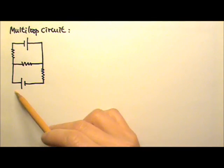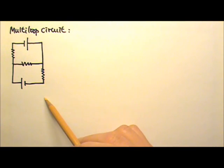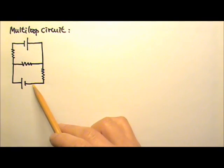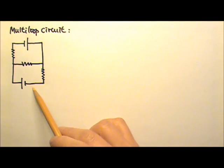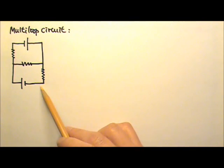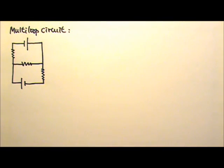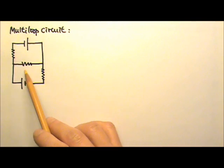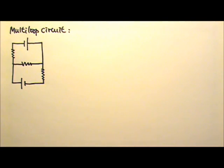Sometimes we encounter multi-loop circuits like this one. It is a multi-loop circuit because there's a loop here, another loop there, and there's also a big loop over here. In this particular circuit, do you see any resistors in series or in parallel with each other?